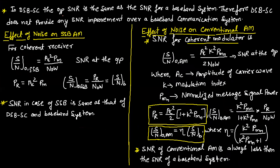In DSBSC, the output SNR is the same as the SNR for a baseband system. Therefore, DSBSC does not provide any SNR improvement over a baseband communication system.